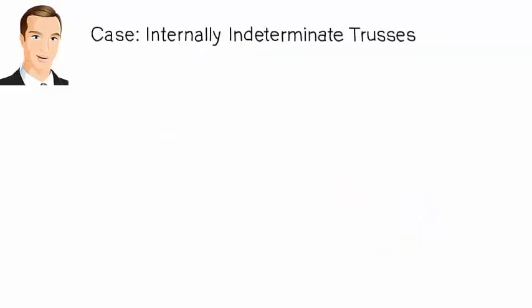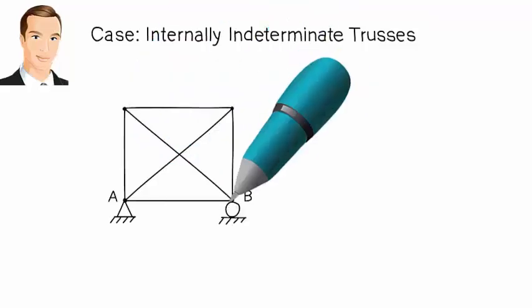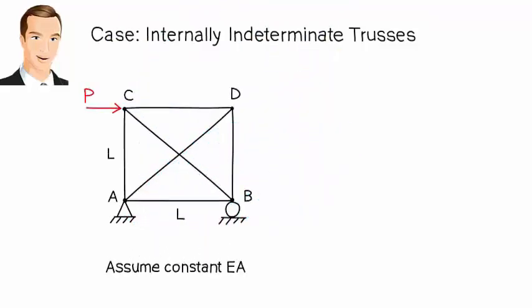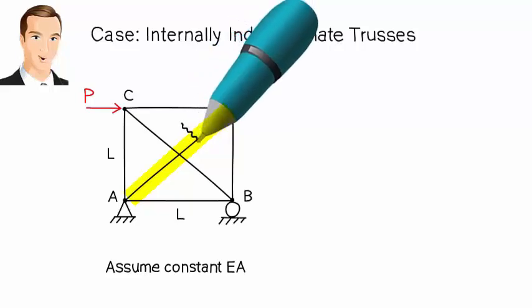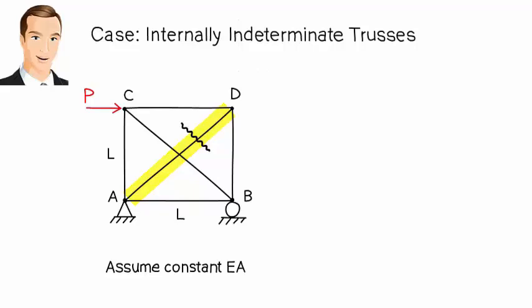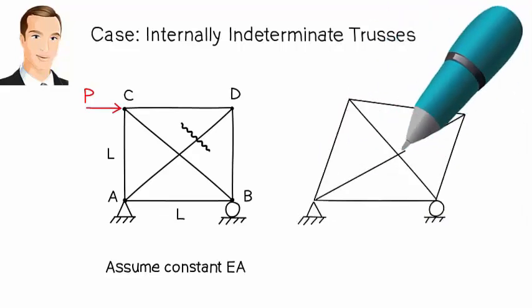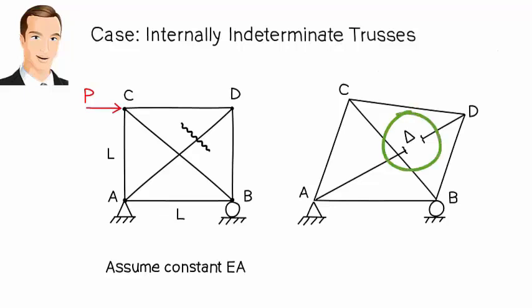Let's analyze another truss — one that is internally indeterminate. The degree of indeterminacy of this truss is 1, so we need to make one of the member forces redundant. Say we pick member AD for this purpose. To make the force in the member a redundant force, we assume the member is cut, thereby taking away its ability to carry an axial force. This, in effect, turns the truss into a statically determinate one. Now, what happens if we place the applied load on the truss? It is going to deform, and a gap develops at the cut point. Let's denote the length of the gap as delta.